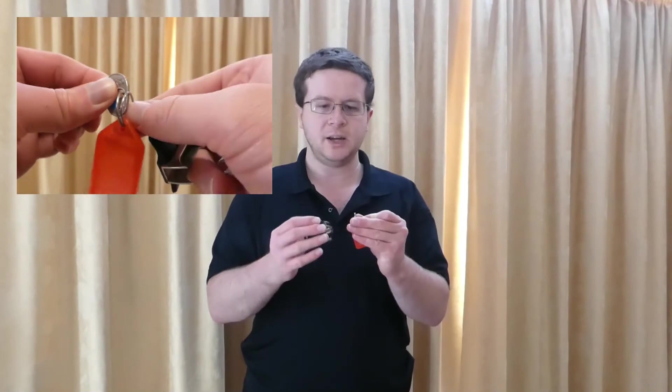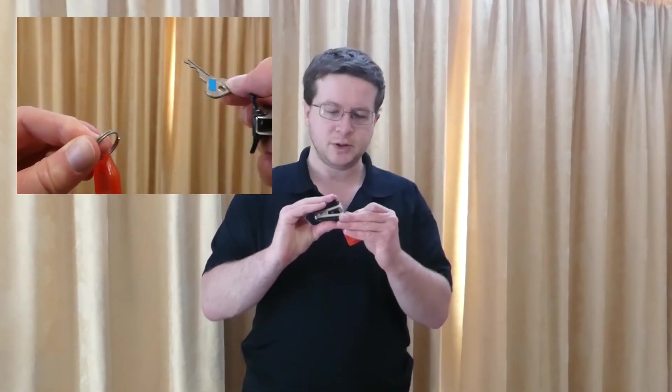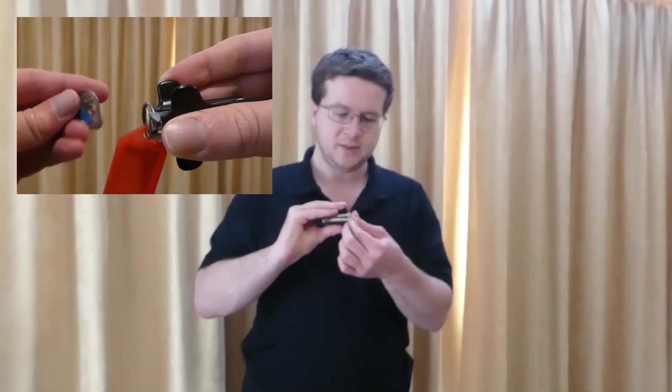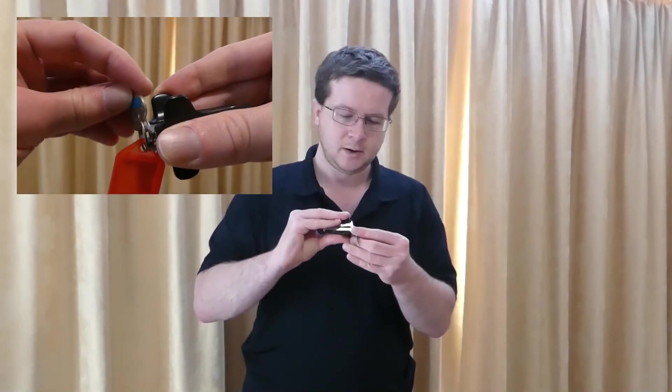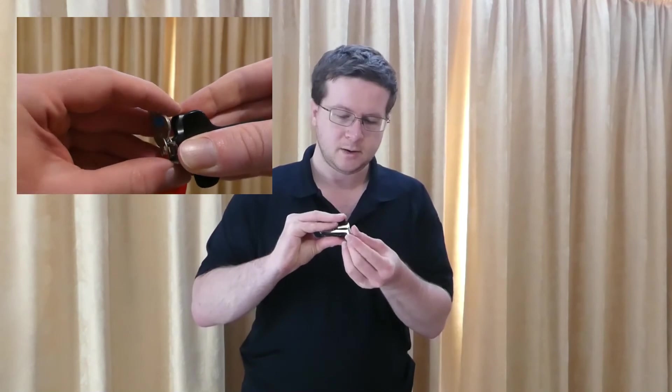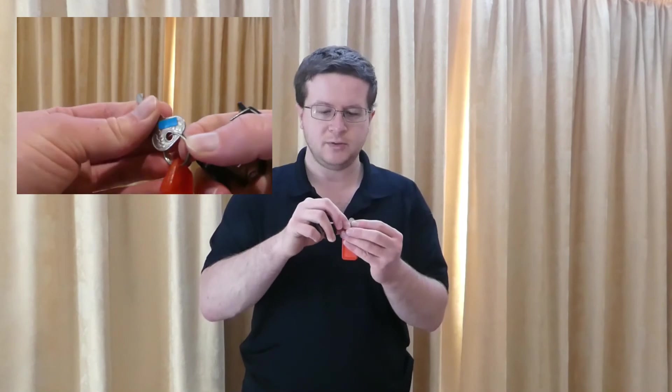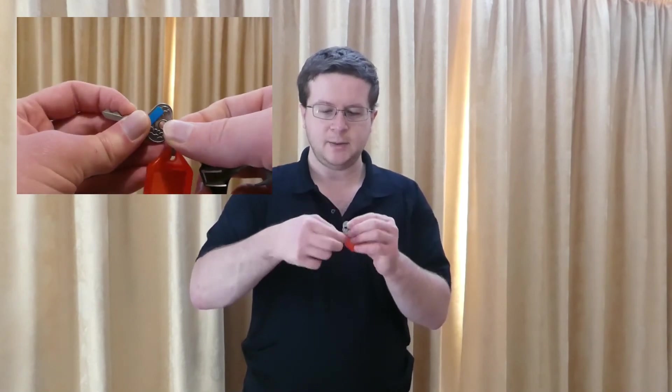When you're ready to put a new key on, simply reverse the process. Slide the key in, take away the staple remover, and rotate the key back on.